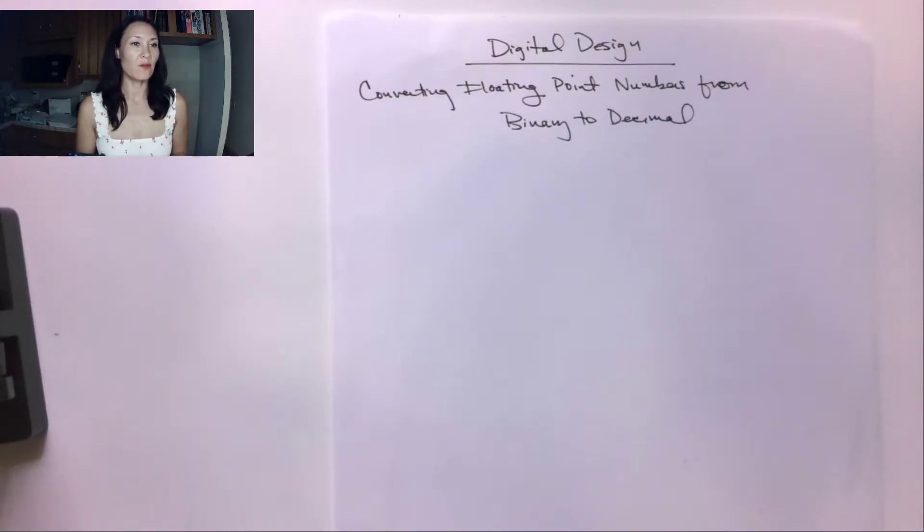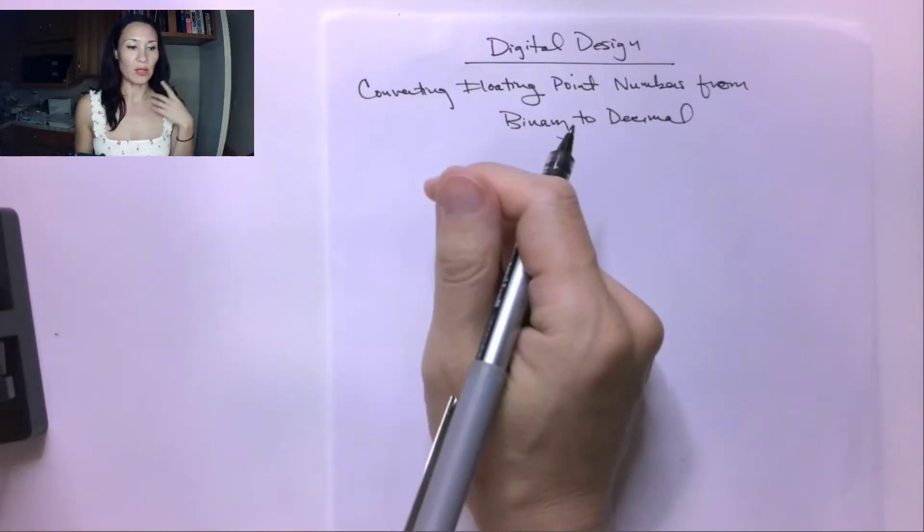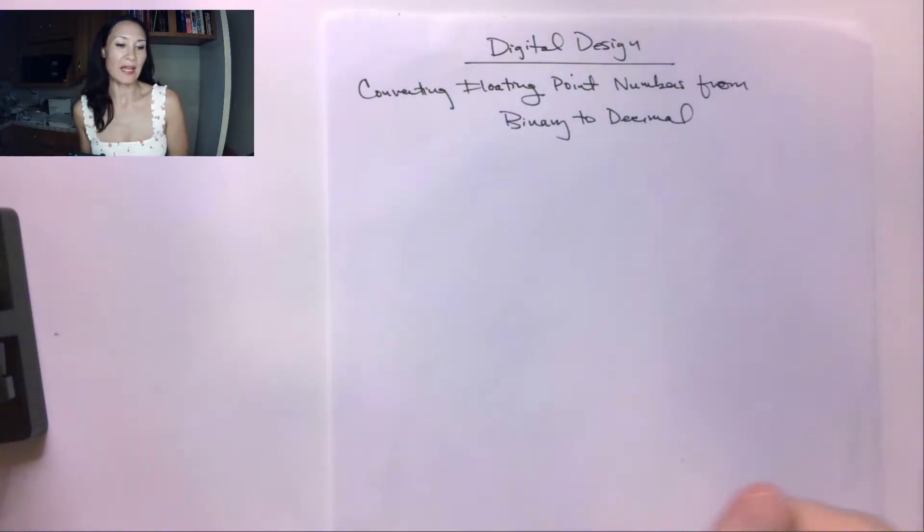We just saw how to convert a decimal floating point number, like 23.375, to binary. But now let's look at how to go from a floating point binary number to its decimal equivalent.